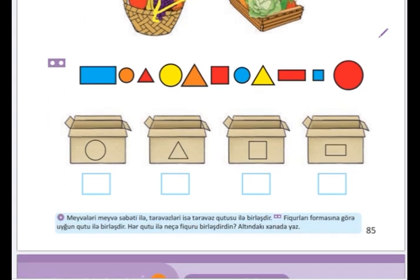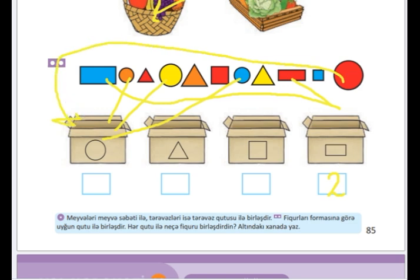Tapşırıq ikidə figurları formasına görə uyğun qutu ilə birləşdiririk. Hər qutuda neçə figur olduğunu altındakı xanəyə yazacaq. Deməli, düz bucaqlı - bir, iki düz bucaqlı oldu. Bir, iki, üç, dörd dairə oldu. Bir, iki, üç - üç bucaq oldu. Bir, iki - iki kvadrat olub.